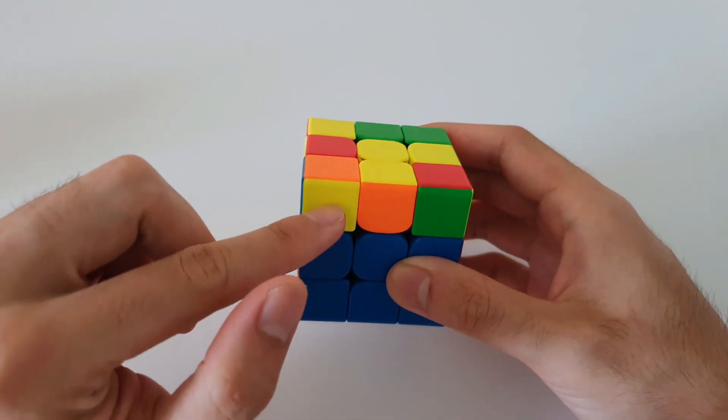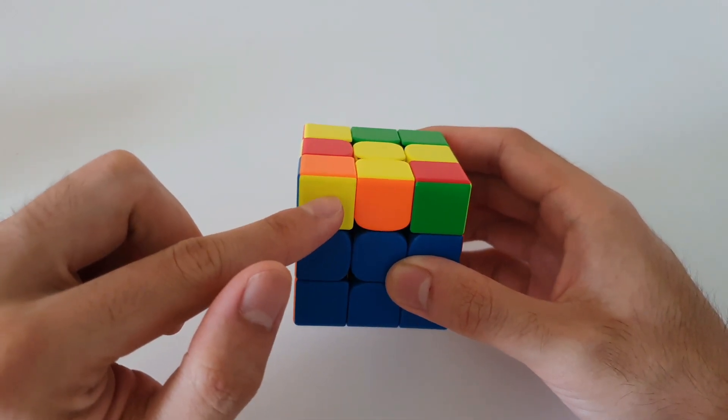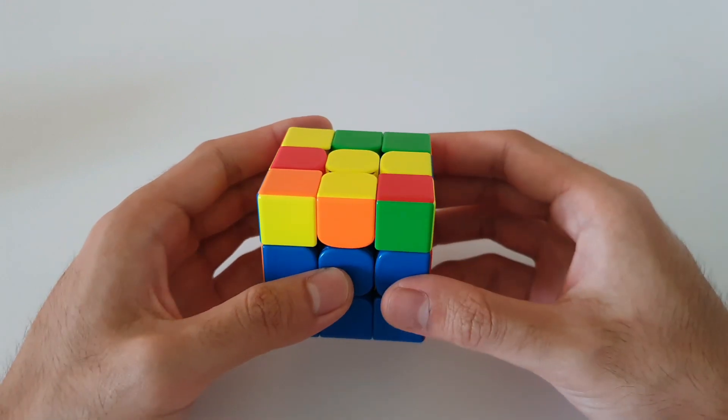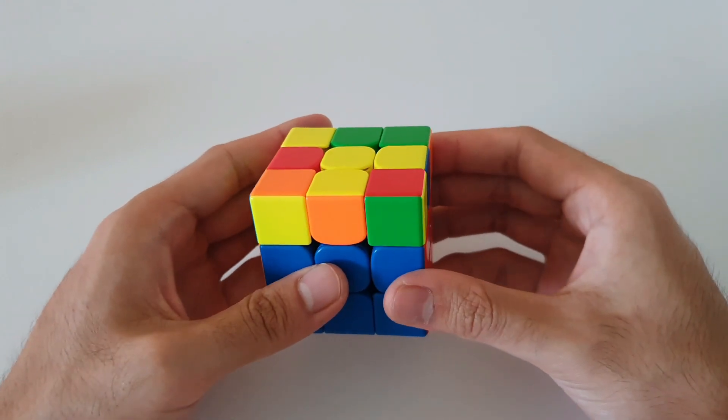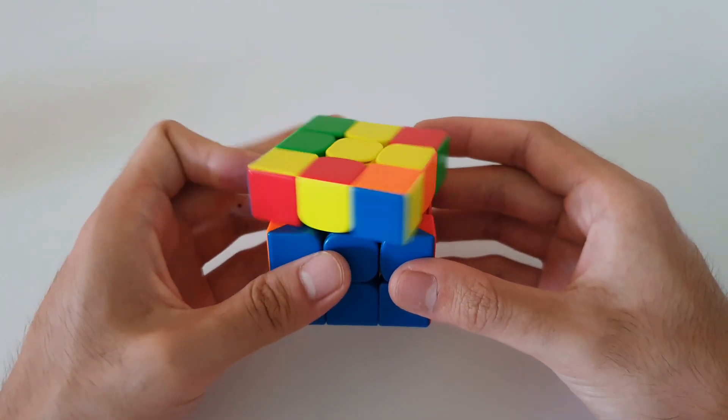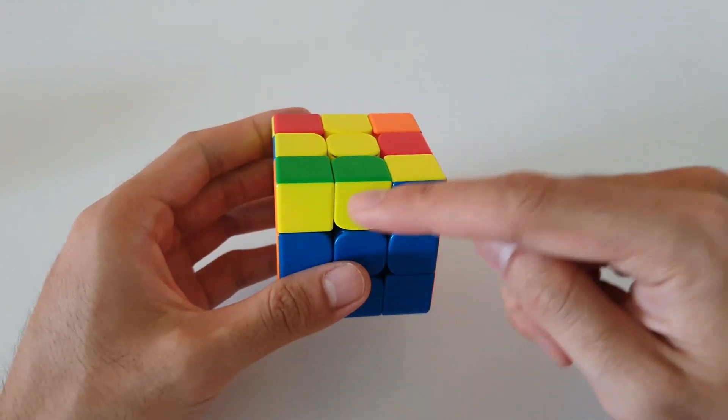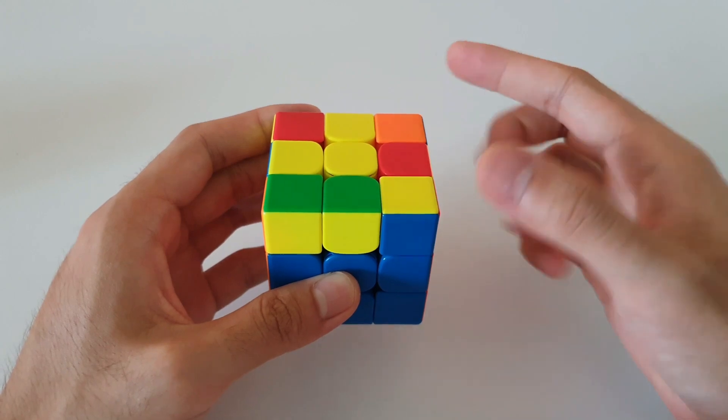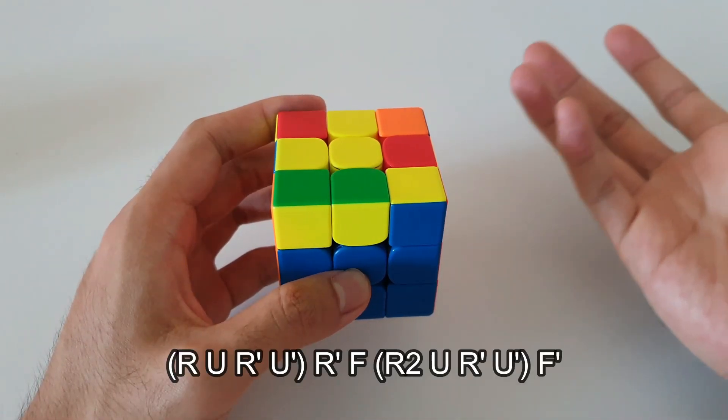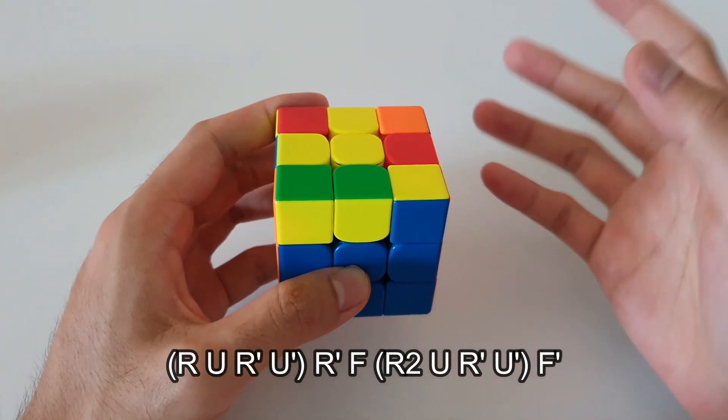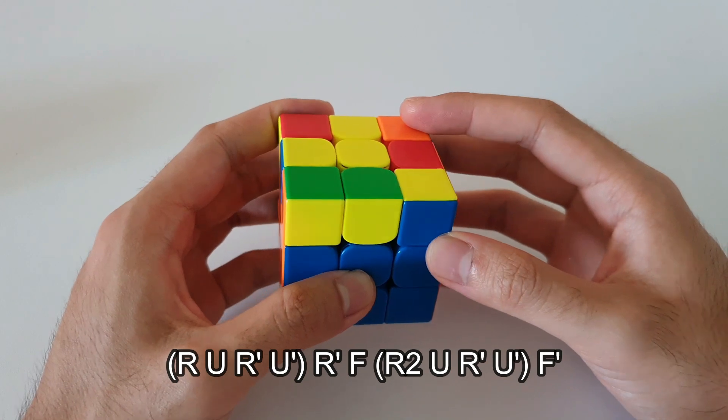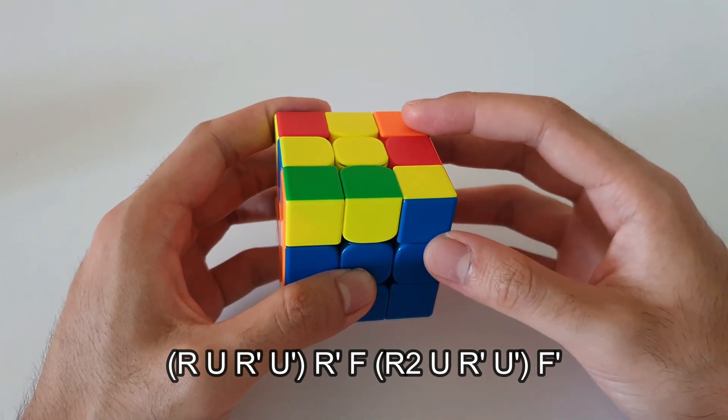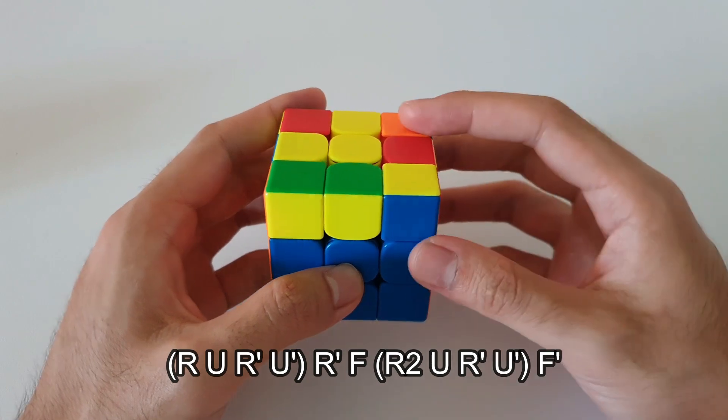So once again, 2x1 bar at the back, it is the left-handed algorithm because the yellow color at the front here is on the left side. If you did want to use an alternative right-handed algorithm for this case, then you actually want to hold it like this. So the 2x1 bar at the front, or you can think of it as your case, but mirrored from the back angle.